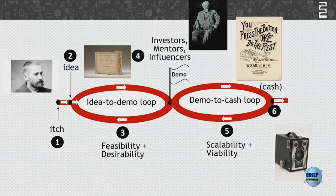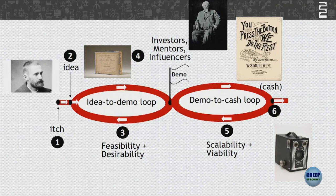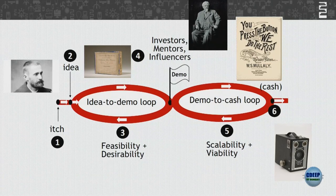This is how the two loops look — very different from Dunzo. Eastman spent a lot of time on idea-to-demo first, perfecting the dry plate process. Then he started selling, and eventually realized patenting was not enough. The campaign became 'you press the button, we do the rest.' Once you finish the roll, you mailed the camera to Rochester and they would develop the photos, load another roll, and send the camera back.